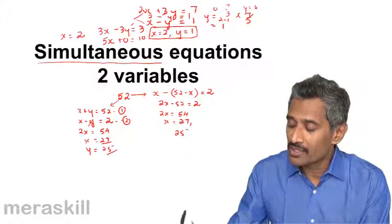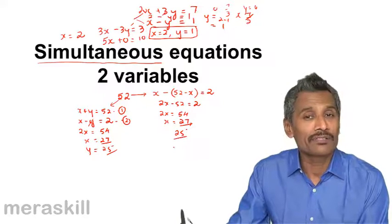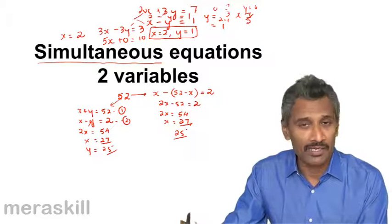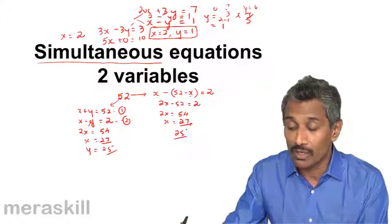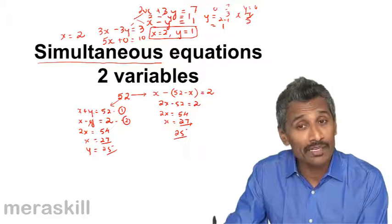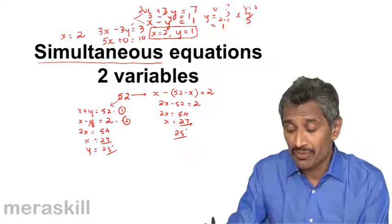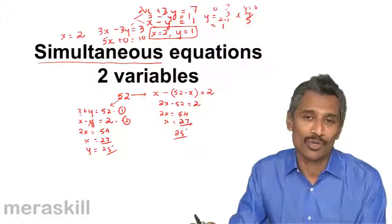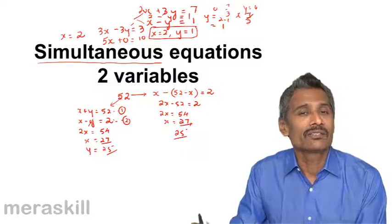So either way you get 27 and 25 as the form, but the form in which this equation has been made, the way it has been formed, is using one variable here, you're using two variables, and additionally since there are two variables you need two equations to solve them and we solve them simultaneously.